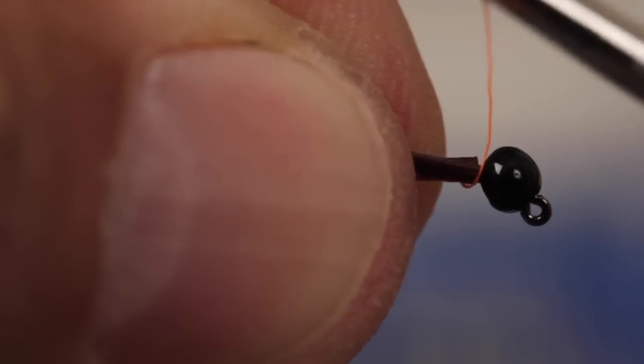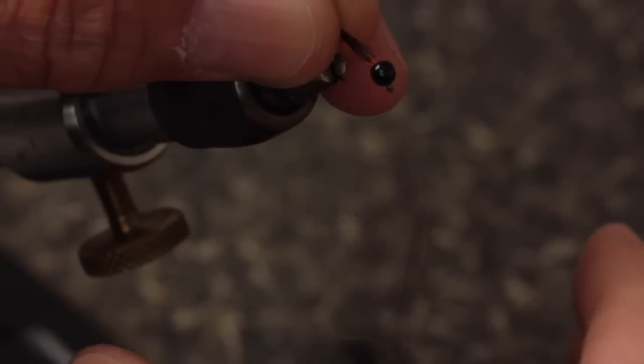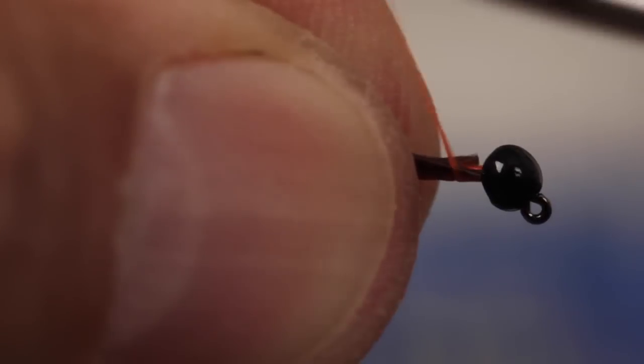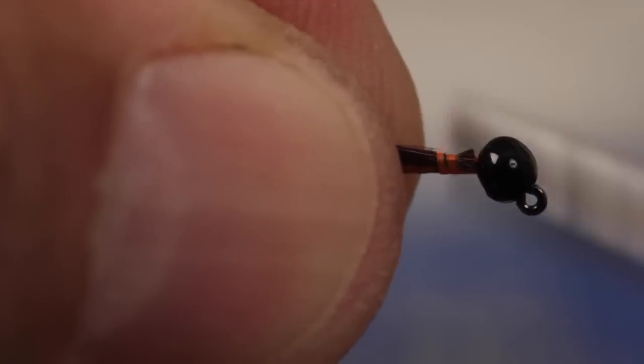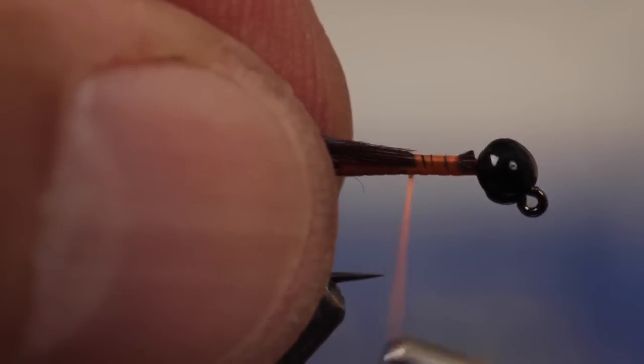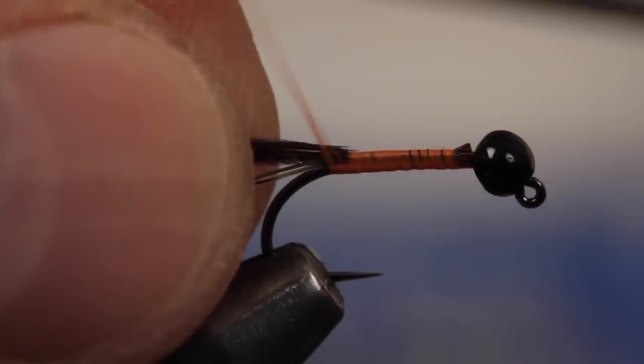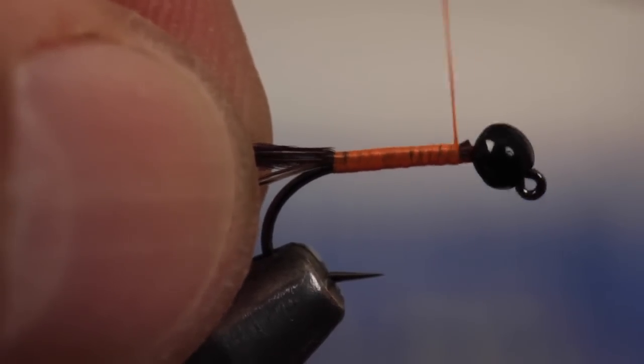If your thread wants to jump forward and miss the fibers when you go to wrap, try giving your bobbin a counterclockwise spin which will flatten the thread and cause it to jump more rearward so it catches the pheasant tail. Take adjacent wraps rearward to bind the pheasant tail fibers to the top of the hook shank. Go all the way back to the bend, then make open spiral wraps back up to the bead.